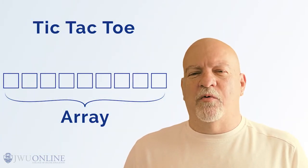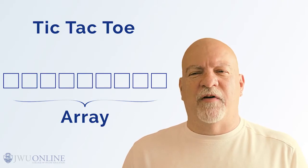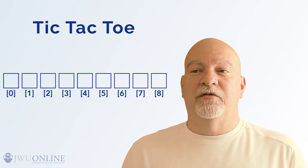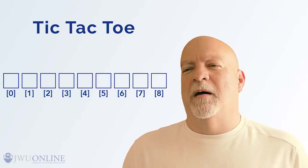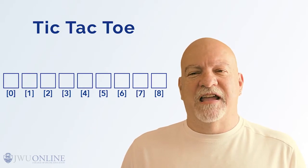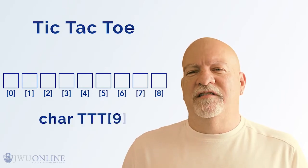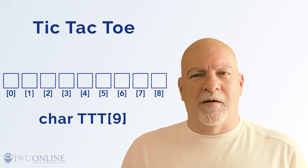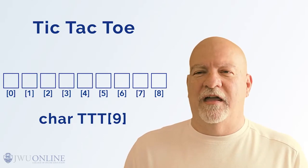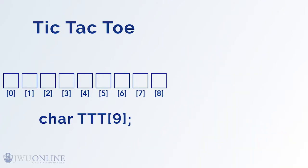An array is our next abstraction. Essentially, an array is a request to the operating system to provide the program with nine linear and contiguous, meaning together, bytes. Let's say that we make that request by using the command char ttt square bracket 9 square bracket. And of course, in the C programming language, we end every command with a semicolon. That command means provide nine character type variables and name the starting address ttt.